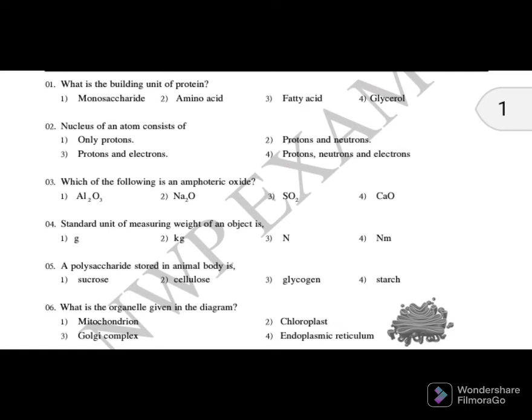A polysaccharide stored in animal bodies. First one is sucrose, second is cellulose, third is glycogen, fourth is starch. Sucrose is disaccharide, cellulose is polysaccharide, glycogen is also polysaccharide, starch is also polysaccharide. But cellulose is component of cell wall of plant cells, but glycogen is stored in animal body, stored in human body. That's why we can say third answer is suitable for the fifth one.